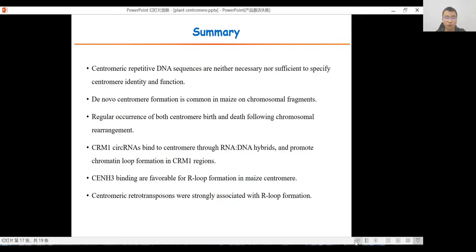To summarize our work, we found that centromeric repetitive DNA sequences are neither necessary nor sufficient to specify centromeric identity and function. De novo centromere formation is very common in maize on chromosome fragments using the irradiation system. Regular occurrence of both centromere births and deaths follow chromosome rearrangement and happen within a narrow developmental window. CRM1 circular RNA can bind to centromeres through RNA-DNA hybrid. Circular RNA can also promote chromatin loop formation in CRM1 regions. CENH3 binding is favorable for R-loop formation in the centromeric region. Centromeric retrotransposons were strongly associated with R-loop formation.